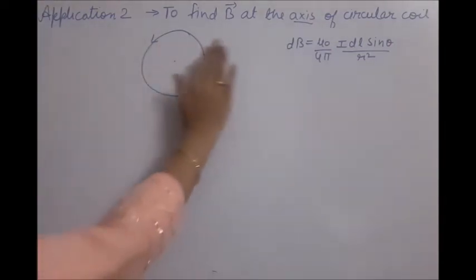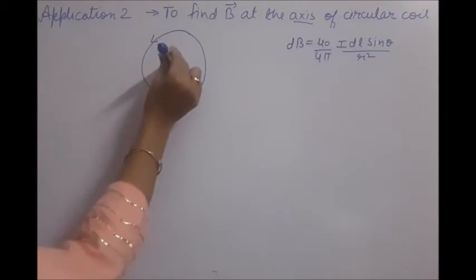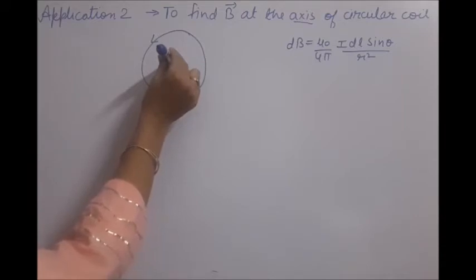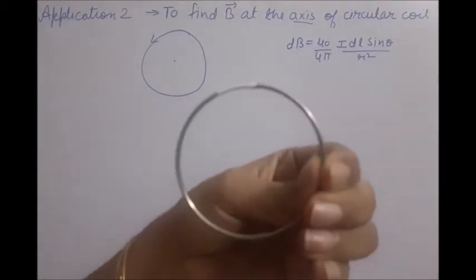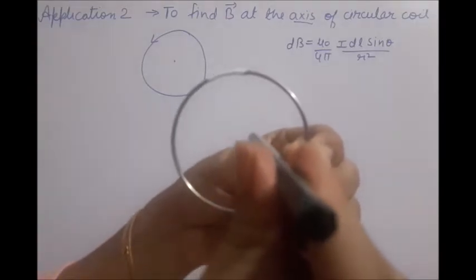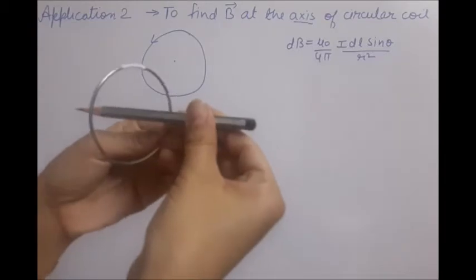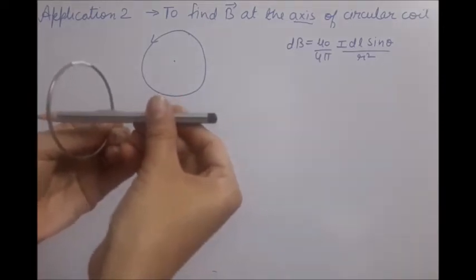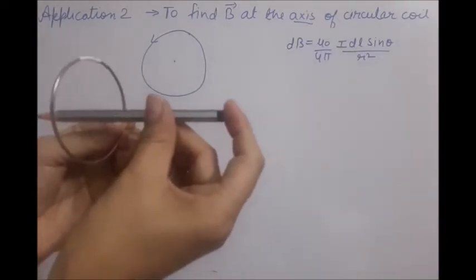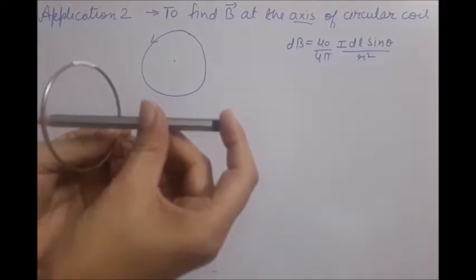The plane of the coil coincides with the plane of the board. So the axis is this line perpendicular to it. We can understand it with the help of a bangle — suppose this is the circular coil. One line passing through its center and perpendicular to its plane is the axis. We can also show the side view of this coil. Our target is to find the magnetic field at some point on the axis.